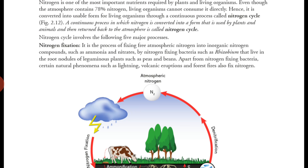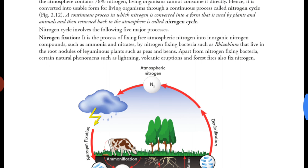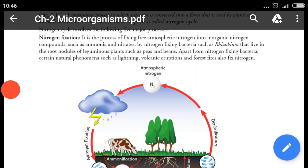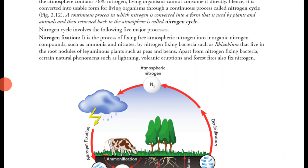The nitrogen cycle — from the environment to usable form for plants and animals, and then returning it back to the environment — this entire process involves five major steps. Let's study these five steps.